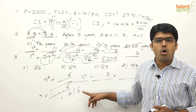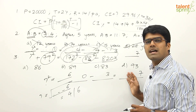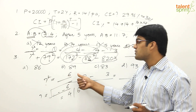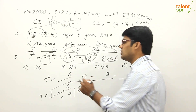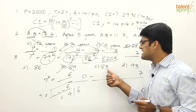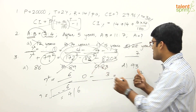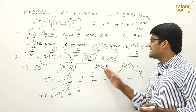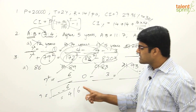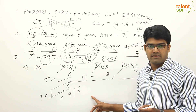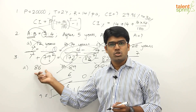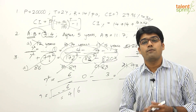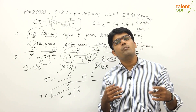Checking the answer options: option A ends in 6 — possible. Option B ends in 9 — eliminated. Option C ends in 3 — eliminated. Option D ends in 3 — eliminated. Options B, C, and D cannot be correct since the answer must end in 4 or 6, so option A (86) is the correct answer. This is the elimination method in action.